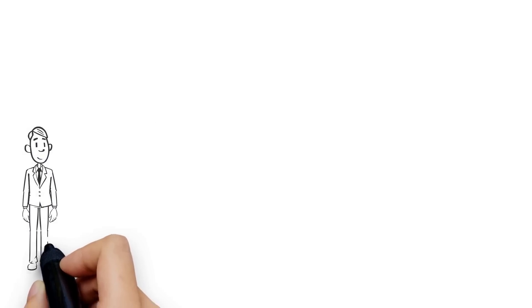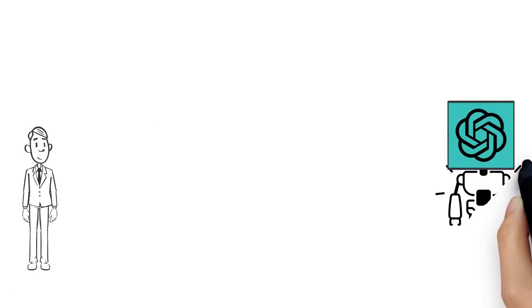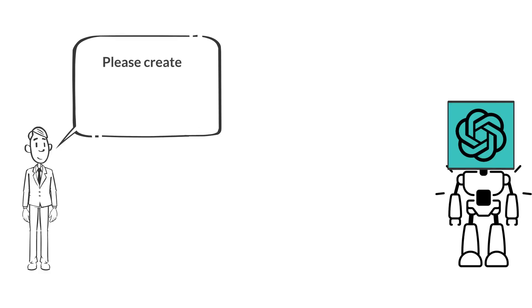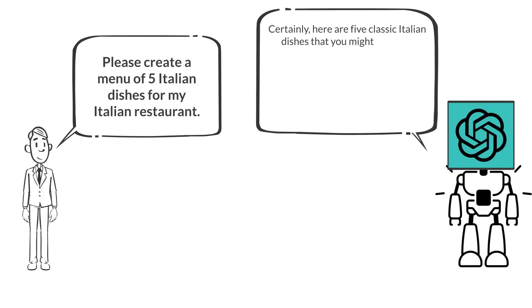For example, in regards to creating a menu, Pete used ChatGPT to ask it if it can create a menu of five Italian dishes for his Italian restaurant, and bingo, it gave him what he needed.